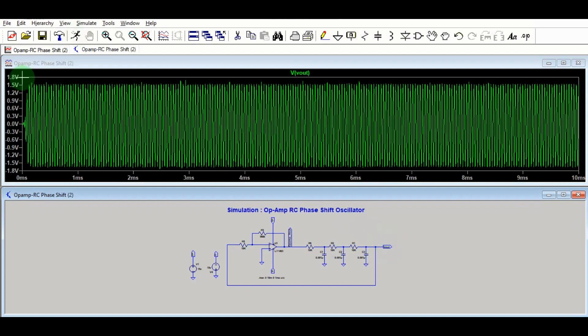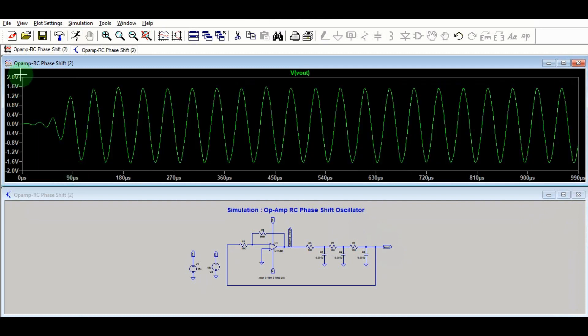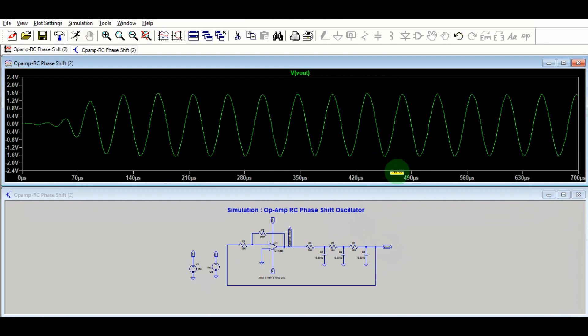I will zoom this portion. You can see at time t equals 0 there is no output, and after time t equals 0 plus there is some noise coming. Then after some point of time it starts oscillating, and its amplitude is now increasing.